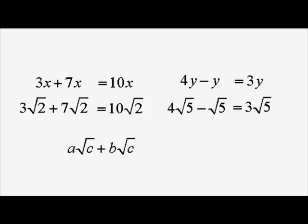So in general, if I have a√c plus b√c, I've got a plus b times √c. Of course, we can only add them together if they have the same square root number. In this case 5s, in this case 2s.